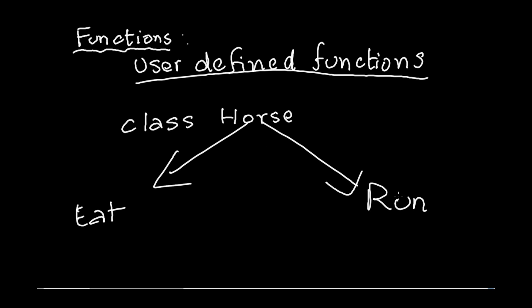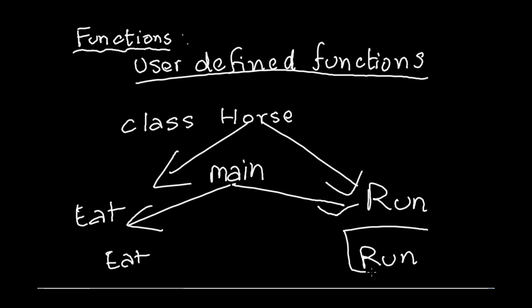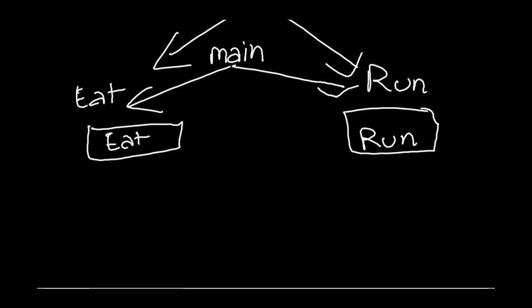If I told you to implement a function to do these things by using functions, you could have one main function that does both these things, or instead you could have one function eat and another function run to work separately for this class horse. That's why you use user-defined functions.